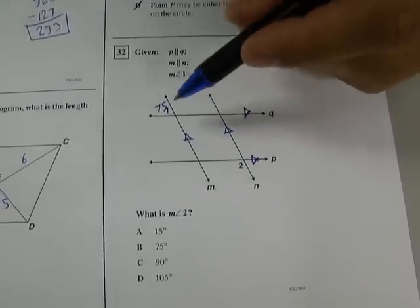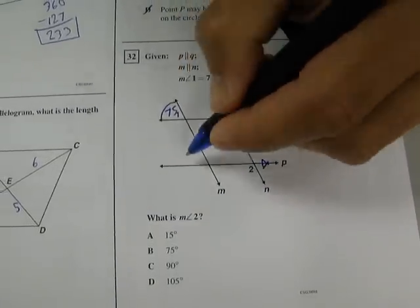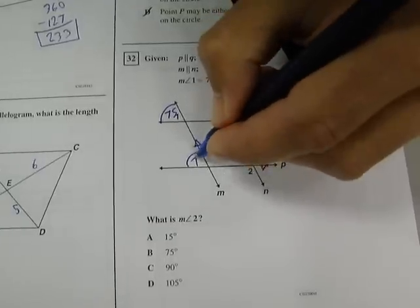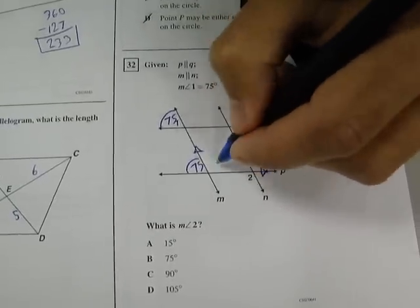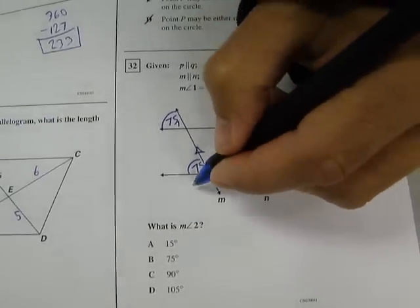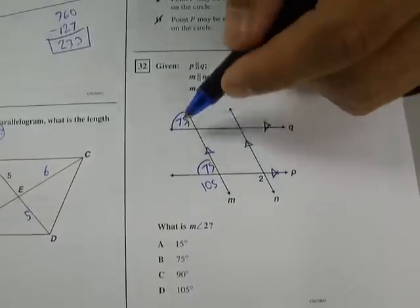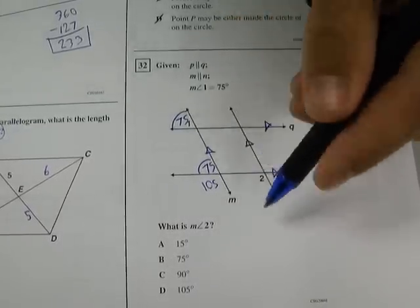Well, if we have parallel lines, then we can do some stuff pretty quick. Let's mark corresponding angles congruent. Therefore, this one here is 75. And then with linear pairs, let's do this one. This one will be 105. Okay, that was pretty quick. We went corresponding angles and linear pairs.